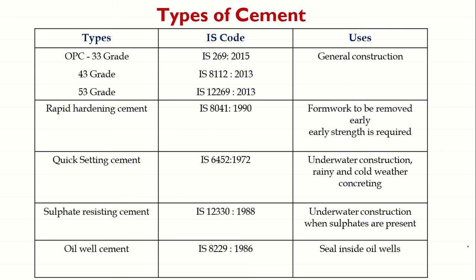The three grades are 33 grade, 43 grade, and 53 grade, where the number 33, 43, or 53 denotes the compressive strength of the cement. For 33 grade OPC we have IS 269:2015 (revised version), for 43 grade we have IS 8112:2013, and for 53 grade we have IS 12269:2013.